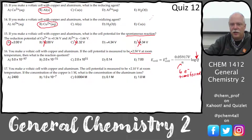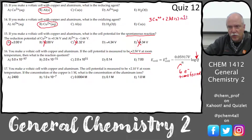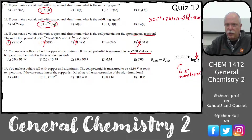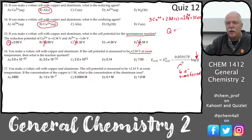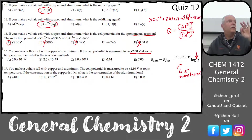Q — the reaction quotient — looks like the equilibrium constant expression, but it's just not the concentrations at equilibrium. Q is equal to products over reactants, with no solids and no pure liquids. So we have the aluminum 3+ concentration squared over copper cubed. That's Q.